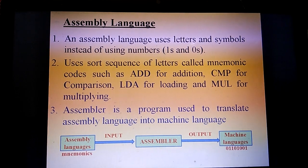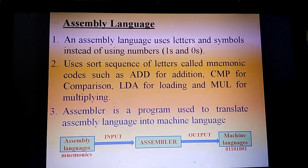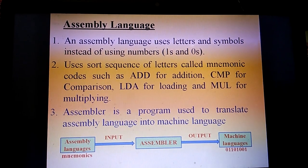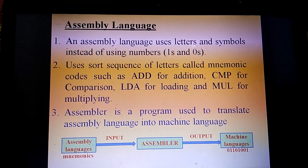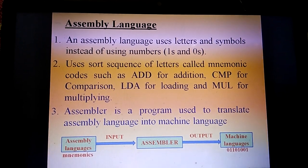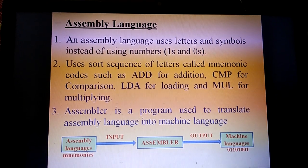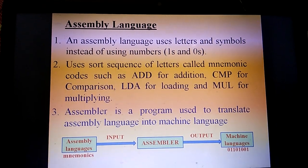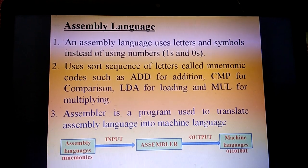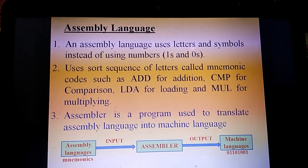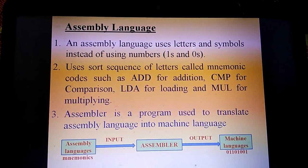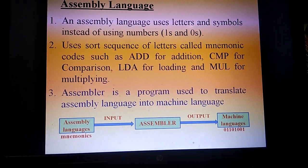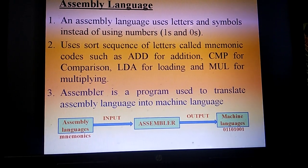The second is assembly language, also called second generation language, which is a low level programming language. Assembly language uses letters and symbols instead of numbers, ones and zeros. A program written in assembly language uses short sequences of letters called mnemonic codes, such as ADD for addition, CMP for comparison, LDA for loading, and MUL for multiplying.